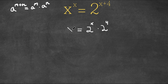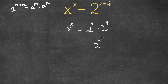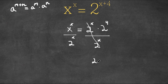So x to the power of x is equal to 2 to the power of x times 2 to the power of 4. Now, I'm going to divide both sides by 2 to the power of x. So for our right side here, these two cancel out, and we would just be left with 2 to the power of 4.